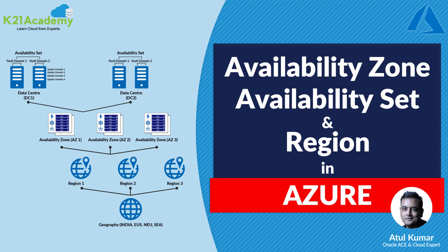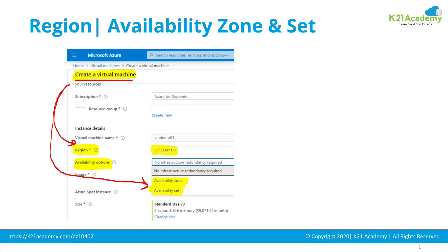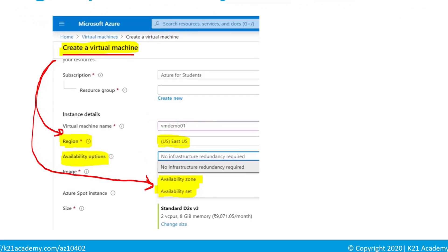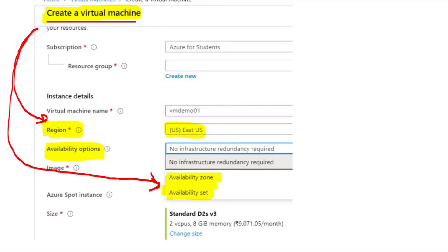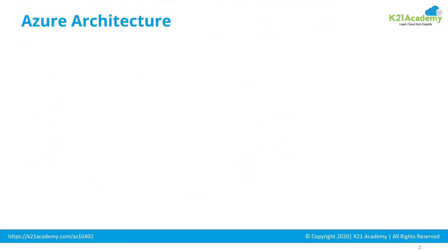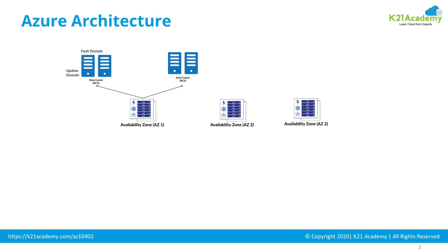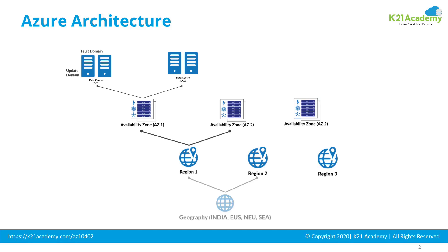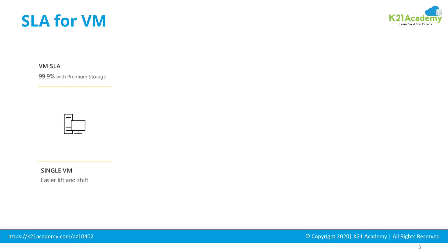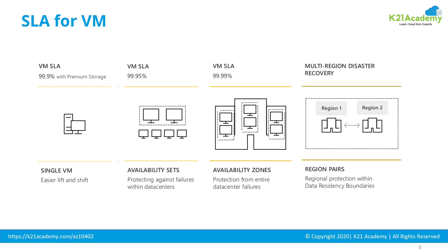When you provision a virtual machine on Microsoft Azure, you select a region in which you want to place this virtual machine, and then you have an option to select either availability zone or availability set. So what is this availability set and availability zone? What is a region or a geography, or fault domain that makes availability set? Also, what is a service level agreement that Azure provides for your virtual machines depending on these options you select? I'm going to cover all this in today's episode.